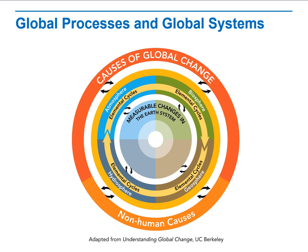Global processes and global systems — how do causes and effects interact within the global system? The causes that can affect elemental cycles include the atmosphere (air), the biosphere (elements found in land), the geosphere (what is exactly inside the earth), and the hydrosphere (water). There are both human and non-human causes that can affect global processes or cause global system changes, as you can see here.